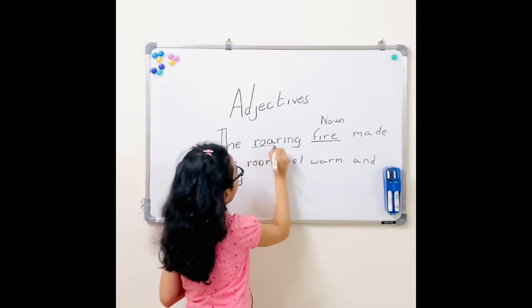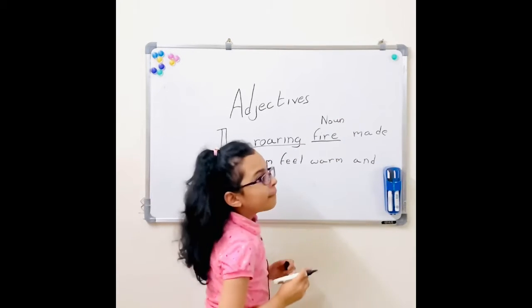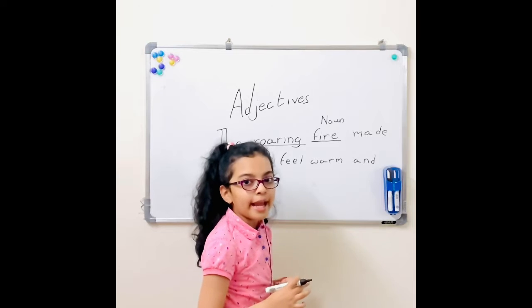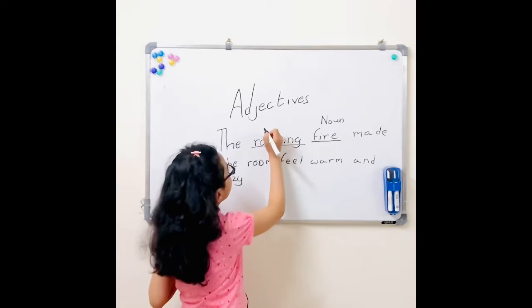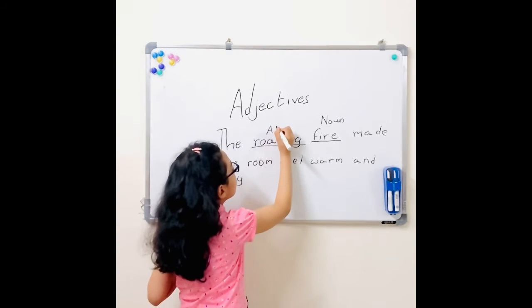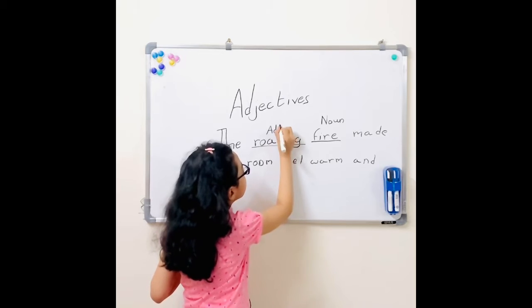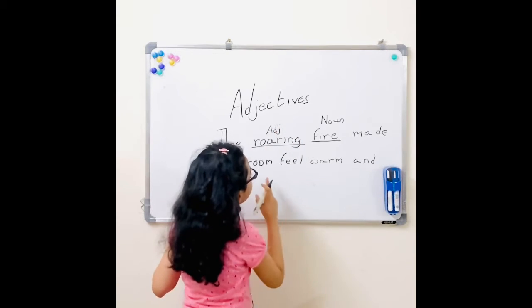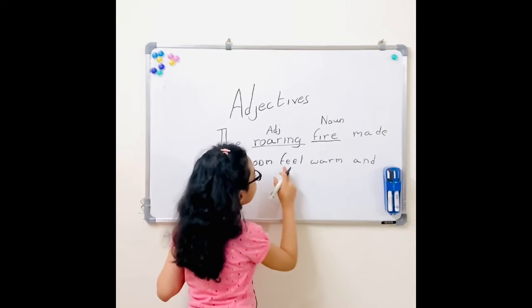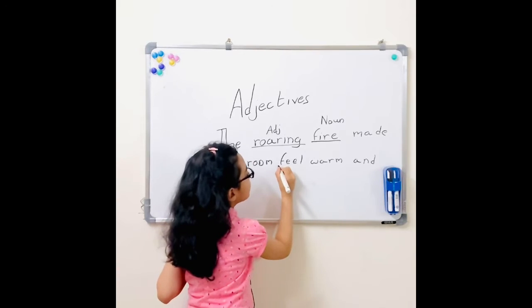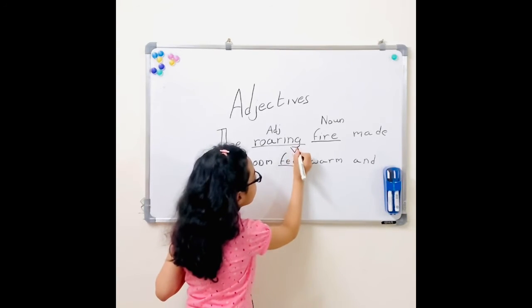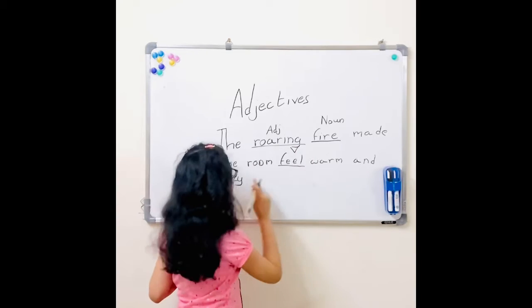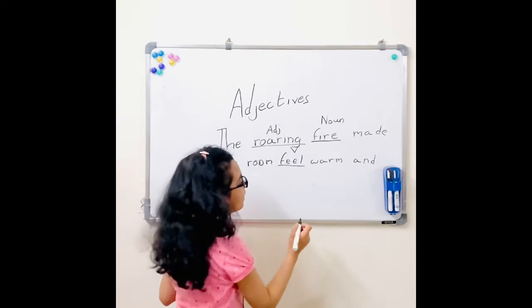And here, roaring is the adjective, but for short, I'll write ADJ. And then here, feel is the verb. So I'll write V. And warm and cozy are the adjectives.